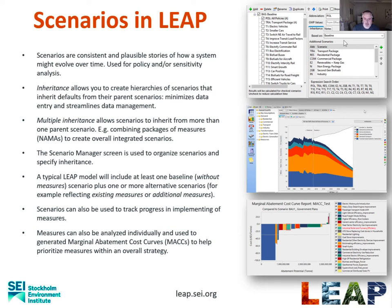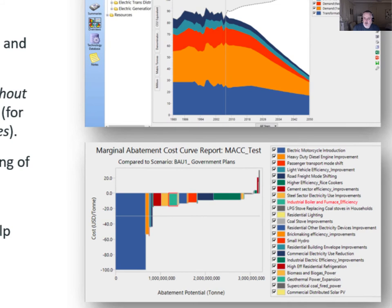Measures can also be analysed individually and used to generate marginal abatement cost curves in LEAP. Marginal abatement cost curves can help you prioritise measures within an overall strategy. The chart shows cumulative abatement of different measures on the x-axis versus the cost of the measures on the y-axis. Some measures have negative costs — meaning cost savings — at some level of abatement, while the measures on the right are the expensive ones with a positive cost relative to the baseline. It's a very common chart used in helping to prioritise which policies and measures to include in your overall mitigation scenario.